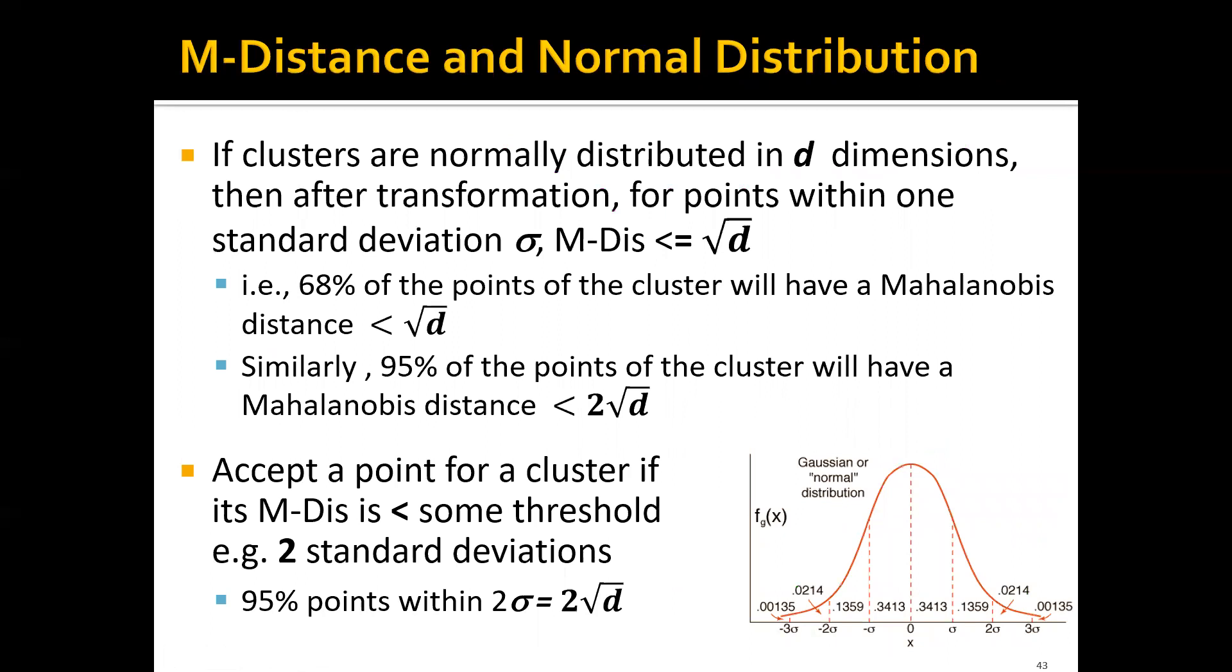So how is the M-distance related to the likelihood of a normal distribution? If clusters are normally distributed in d dimensions, then after the transformation, for points within one standard deviation, sigma, the M-distance would happen to be smaller or equal to the square root of d. That means about 68 percent of the points of the cluster will have an M-distance smaller than square root d.